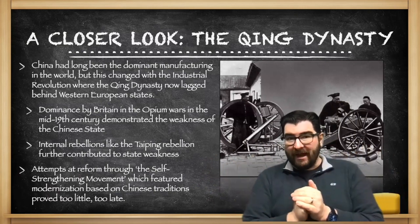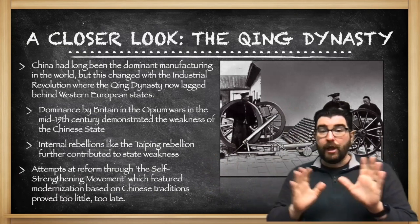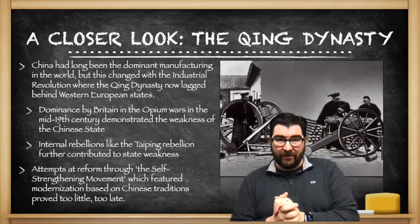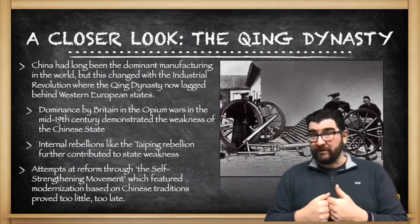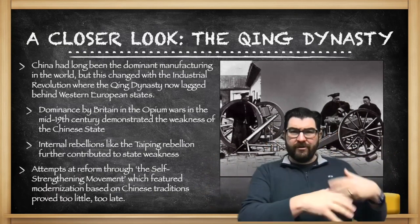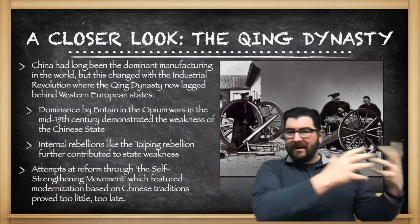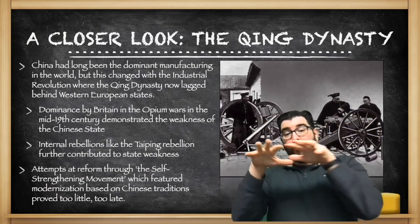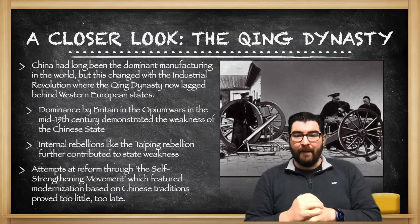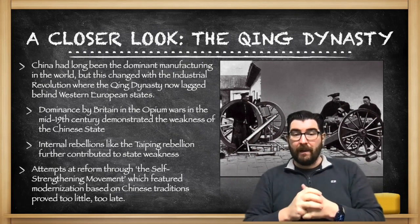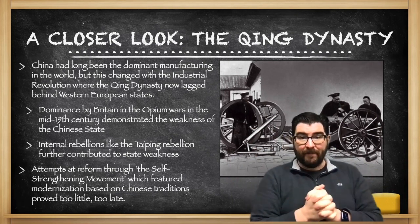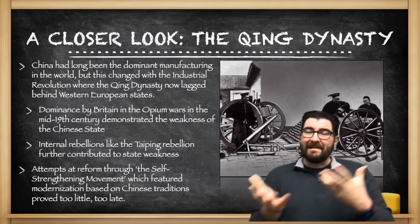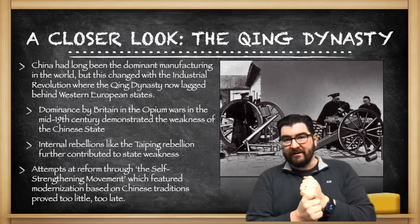First, the Qing Dynasty in China. China has long been the world's dominant manufacturing center, but this changed with the Industrial Revolution as we're going to see Western Europe, Britain, and the United States rise in their percentage of global manufacturing, while places like China are going to decline in terms of their global share. Now we see the Qing Dynasty lagging behind Western European states.